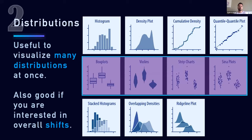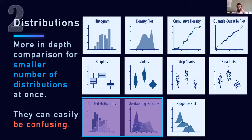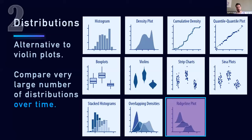These elements are becoming more and more popular and are really useful to visualize lots of different distributions, especially if you'd like to highlight shifts between them. There may be box plots, violins, strip charts, or sina plots. If you need to compare a limited number of distributions — say three or four — you can use stacked histograms or overlapping densities. But if you have more, they can get easily confusing. If you have lots of different distributions and want to inspect them all at the same time, you can definitely use ridgeline plots.